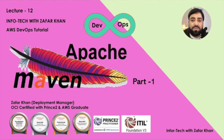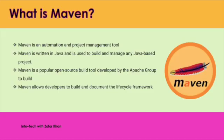Maven is written in Java and is used to build and manage Java-based projects, but it can also be used to build and manage projects written in C#, Ruby, Scala, and other languages. Maven is an open source, popular build tool developed by the Apache group to build, publish, and deploy several projects at once for better project management. The tool allows the developer to build and document the lifecycle framework.